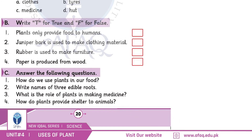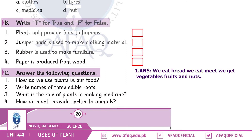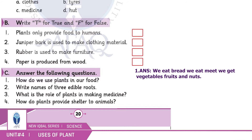Question answers. How do we use plants in our food? Plants are used in food — we eat bread, we eat wheat, we get vegetables, fruits, and nuts.